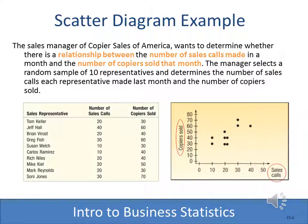One method we can use to see if there's a correlation between an independent and a dependent variable is a scatter diagram. With the example here, we have copiers making some sales calls and the number of copiers sold. We've plotted each of those, and you can see by looking at that scatter diagram that the more sales calls we make, it looks like the more copiers we're going to sell. So it would appear there is a correlation between those two.